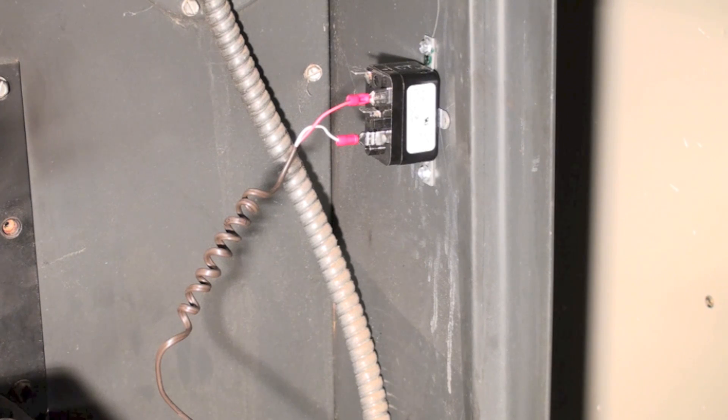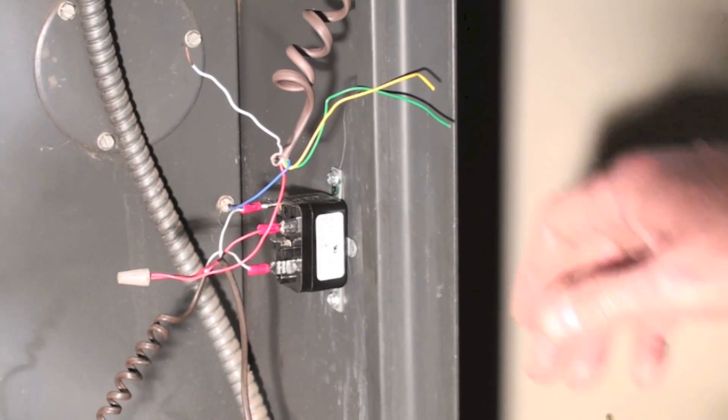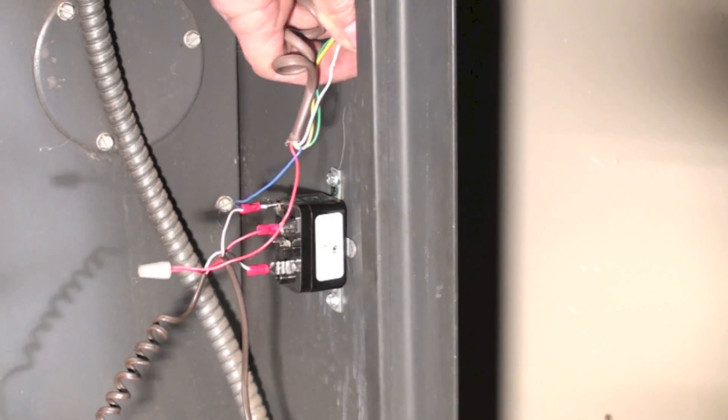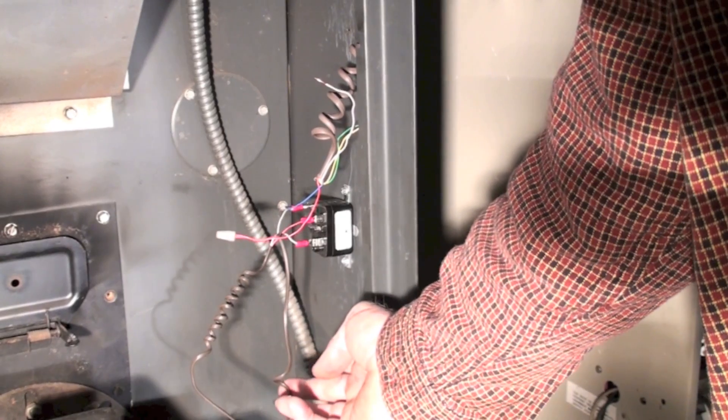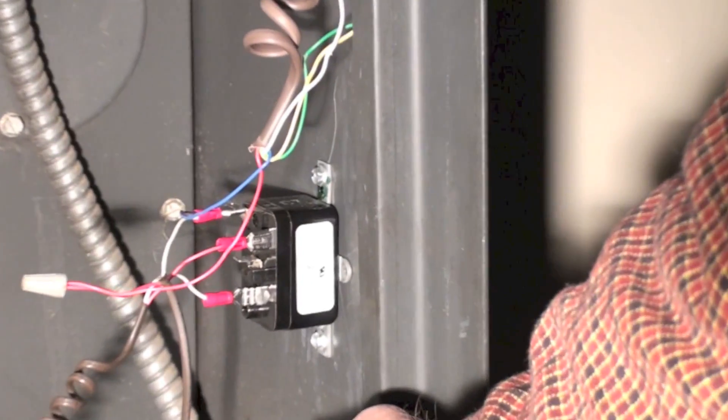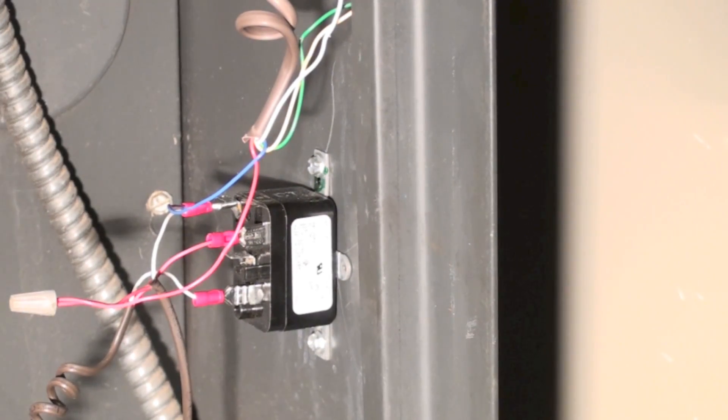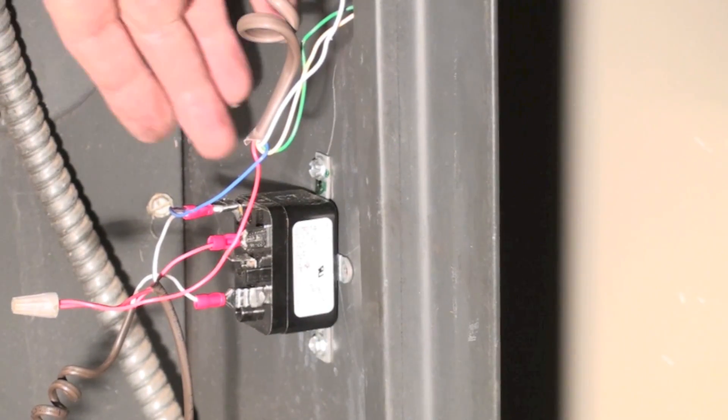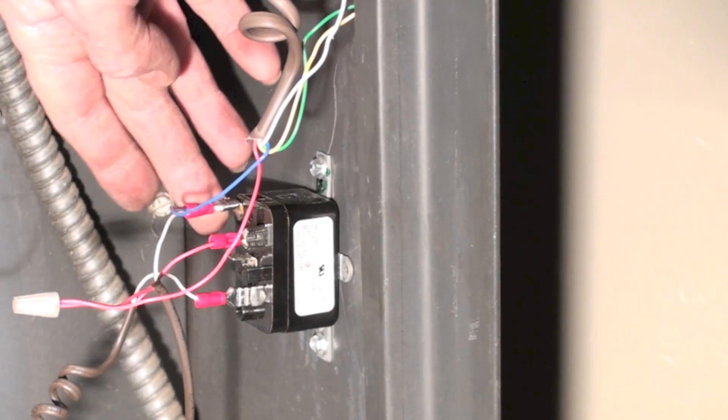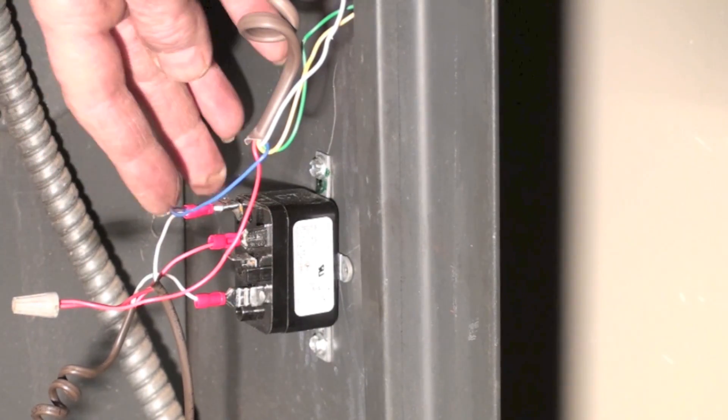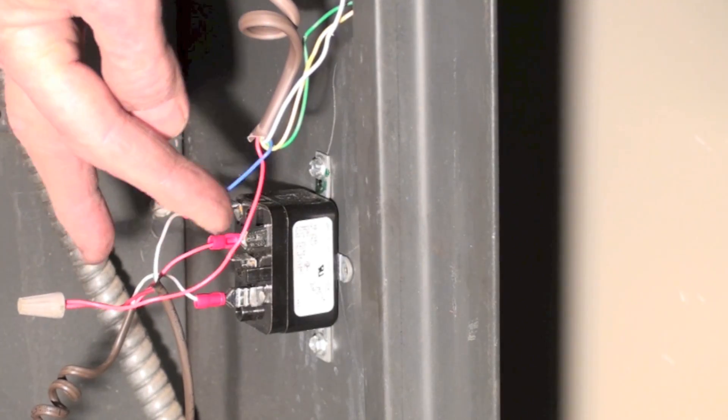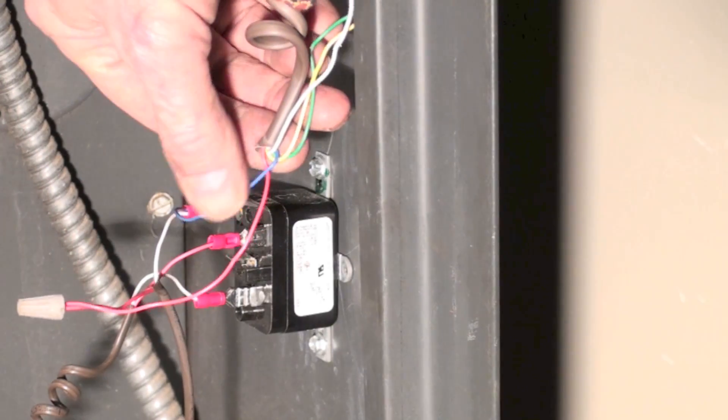What I've done here now, we're starting to look like spaghetti. I've come up from the transformer, which is down below, and I got two wires going to it. One I've used the white as a common wire that goes to the coil of the relay.